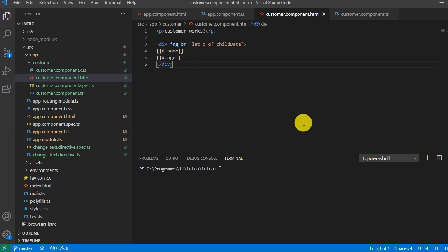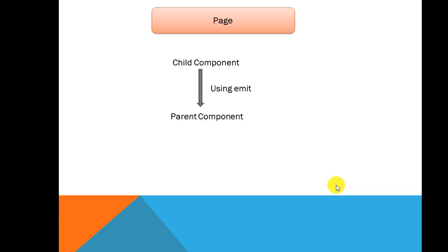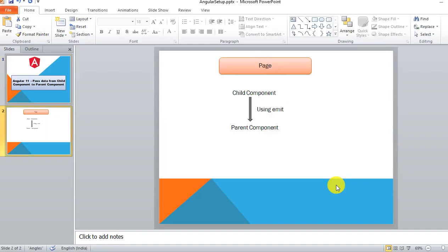I'll share the link to the previous video in the description box. Now in this video we will see how we pass data from child to parent, which is a bit different. When we pass data from child to parent we require an event called emit. Let's go to Visual Studio and create an example.